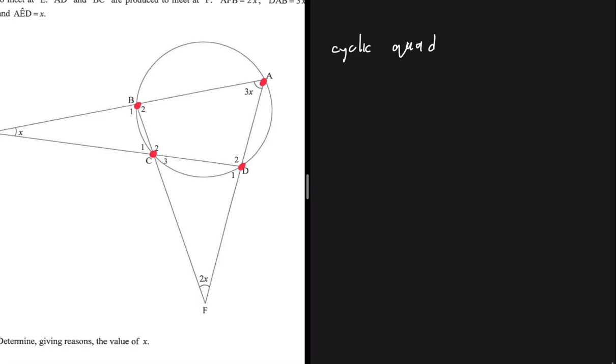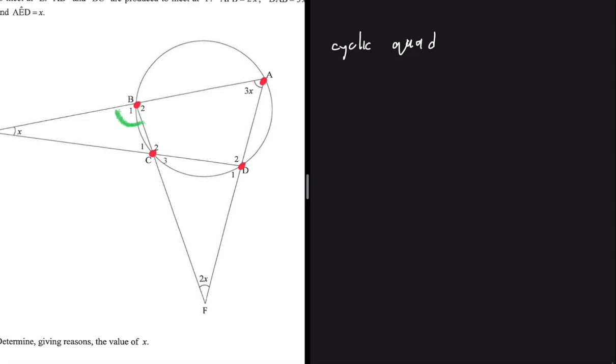From the cyclic quadrilateral we know that angle b1 should be equal to angle d2, but we don't have the value of b1 or d2, so there isn't much we can do about that.